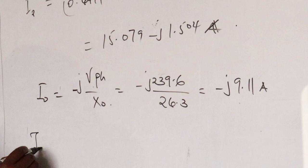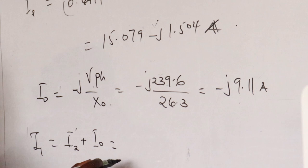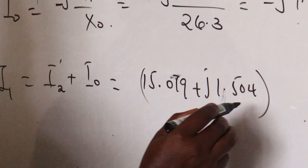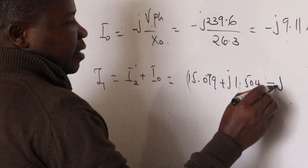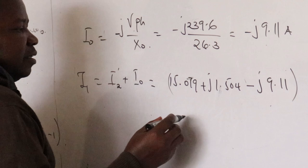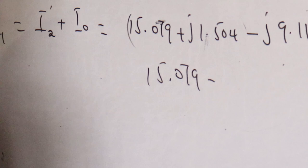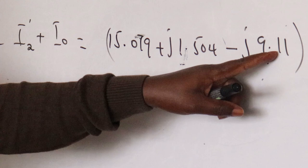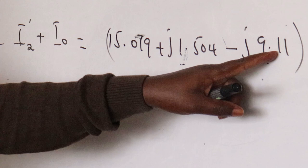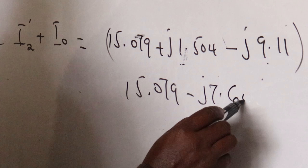Total I1 equals I2 prime plus I0: 15.079 minus J 1.504, plus negative J 9.11. Subtracting only the J terms gives approximately 15.079 minus J 10.614. Converting this to polar form gives I1 approximately 18 amps at an angle of negative 35 degrees.